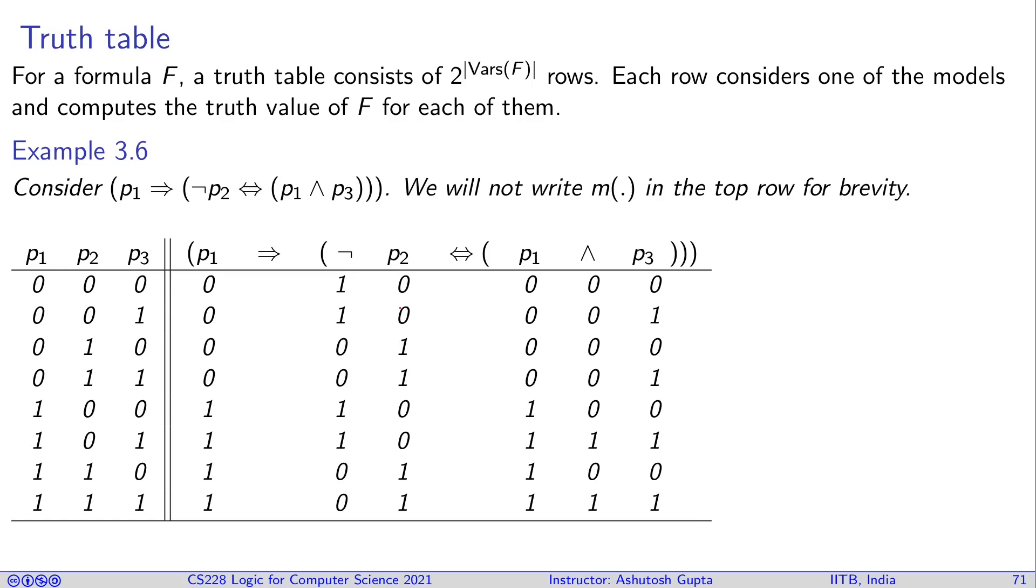Now you have to compute this column. This is basically taking equivalence of this column and this column. So whenever they are equal, for example here they're equal, then you get one. When they're different you get zero. Now our contenders are this column and this column to build the column for this connective.